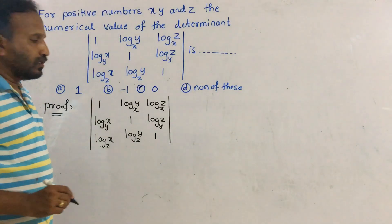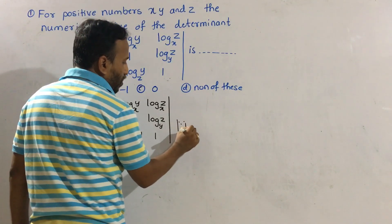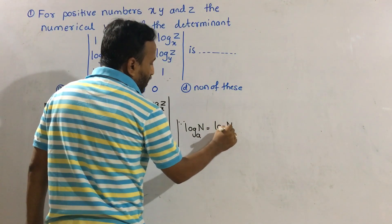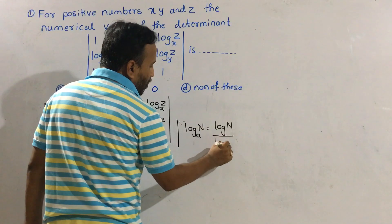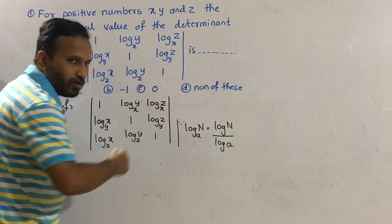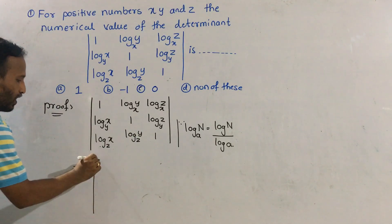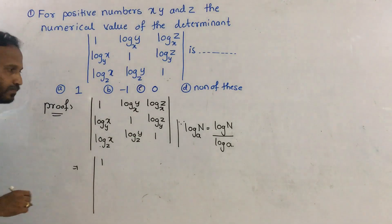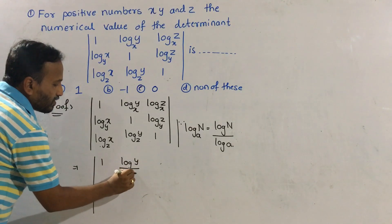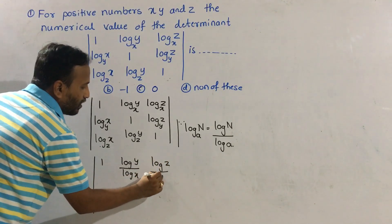Here we apply the logarithm change of base formula: log n to the base a equals log n divided by log a. Applying this formula, the first row becomes: 1 as it is, log y divided by log x, log z divided by log x.